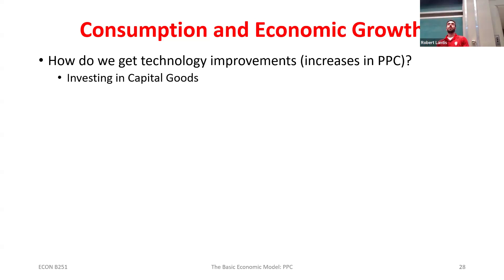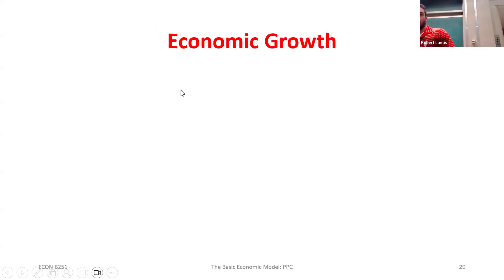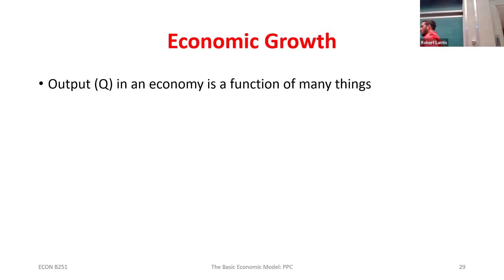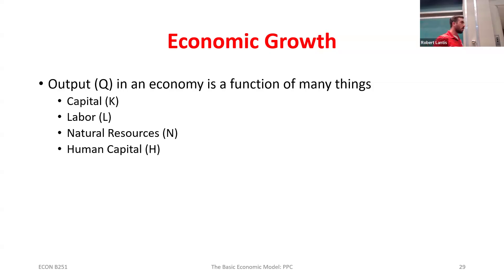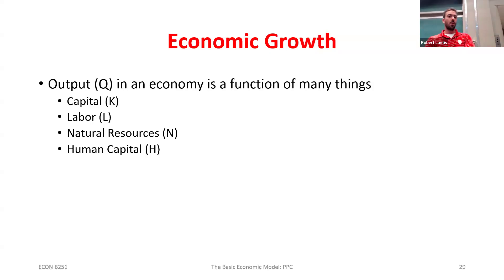Output in the economy is a function of a bunch of different factors of production: capital — investments we make in new technology and machinery; labor — almost everything requires some labor hours; natural resources or raw materials like iron and wood; and human capital. We could make many more categories — in more advanced economics you divide labor into skilled and unskilled since they get very different wages and have very different impacts on output. We'll start out thinking about these four.